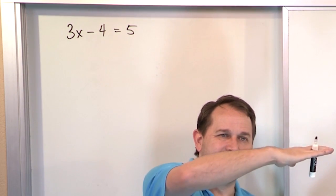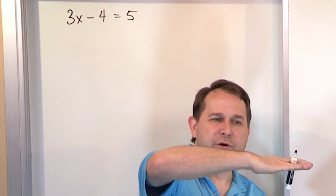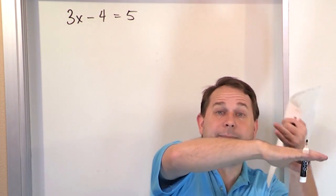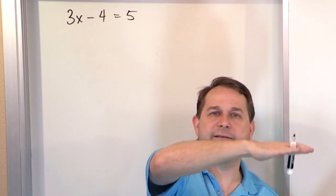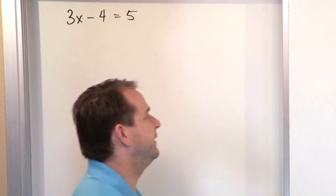It's like a seesaw. If you unbalance it, it tips over, but if you do the same thing to both sides, then it stays balanced, it stays equivalent.